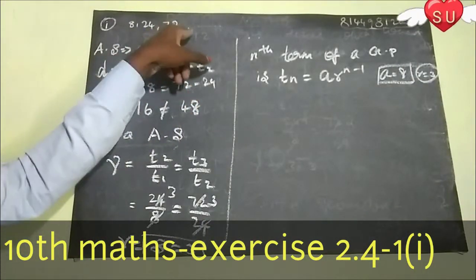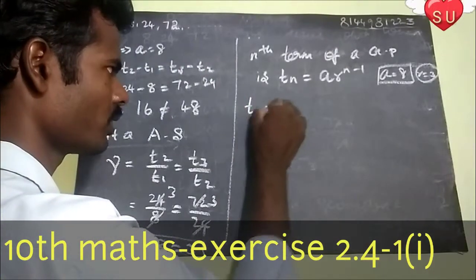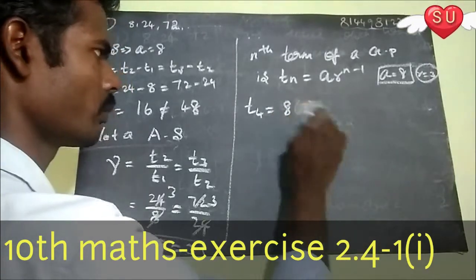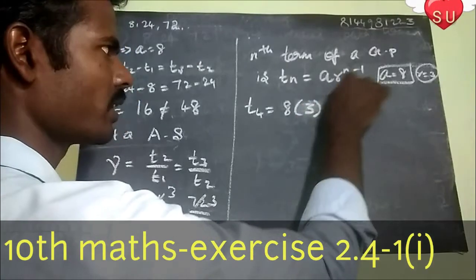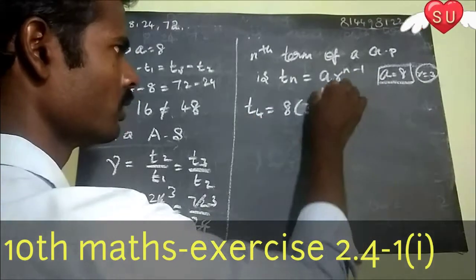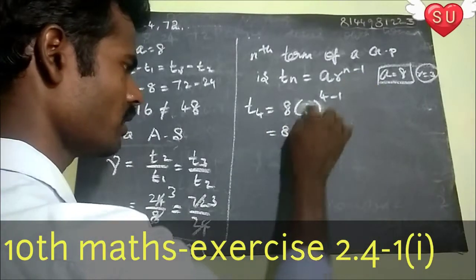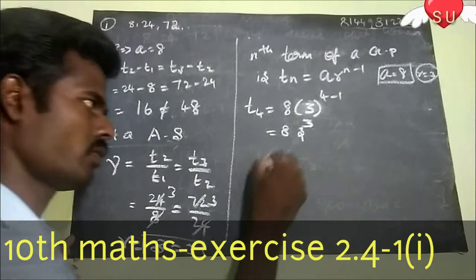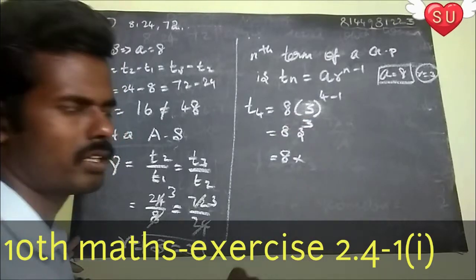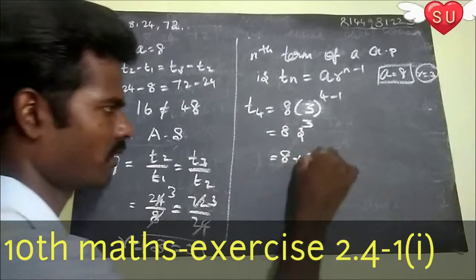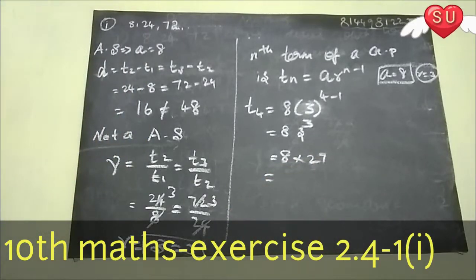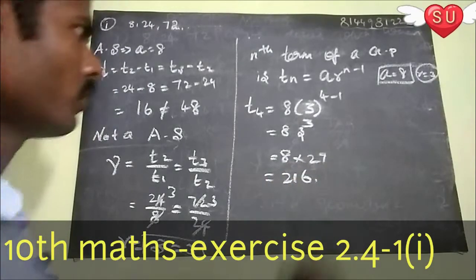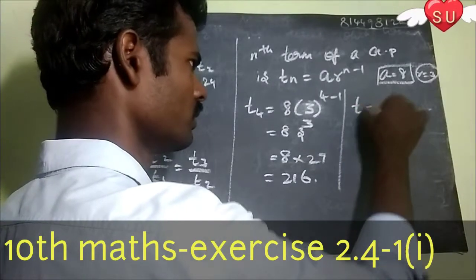For the fourth term, n equals 4. So T4 equals 8 into 3 to the power of 4 minus 1, which is 8 into 3 to the power 3. Since 3 cubed is 27, T4 equals 8 into 27, which equals 216.